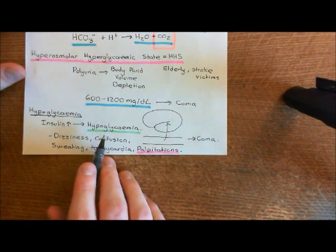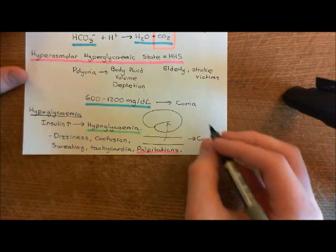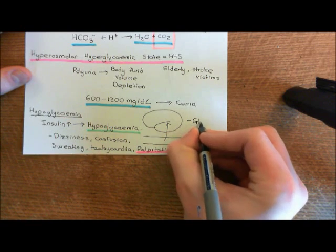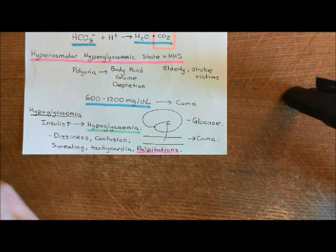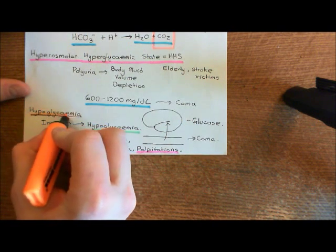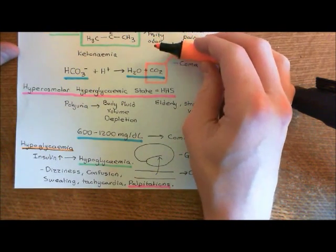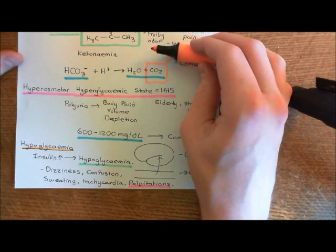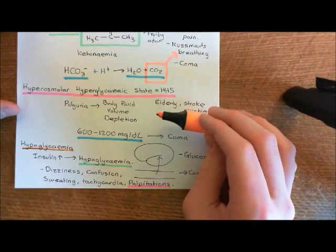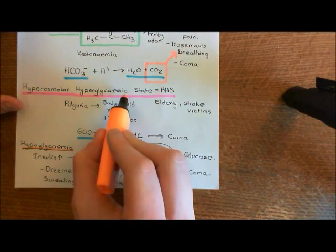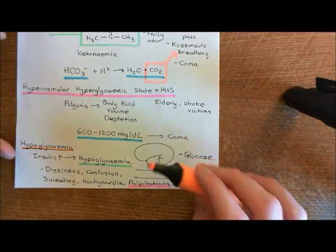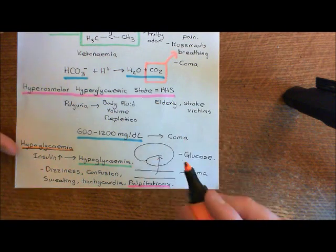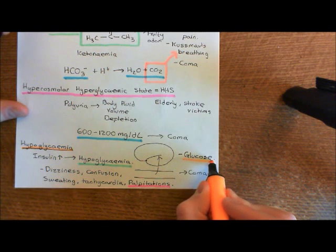The treatment for hypoglycemia is to give glucose quickly. Notice that all three acute complications of diabetes can result in coma, but what's happening to cause that coma is completely different in each case. In the first case — diabetic ketoacidosis — the blood is becoming too acidic, and the treatment is insulin. In the second case — HHS — the blood has too high a concentration of glucose and other solutes, and the treatment is water. In this final case, blood glucose concentration is falling through the floor, and the treatment is glucose.